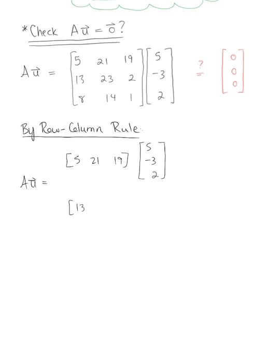Next, the second row is 13, 23, 2, multiplied by that vector u, 5, minus 3, 2. And last but not least, we have 8, 14, 1, multiplied by that same column vector u, 5, negative 3, 2.